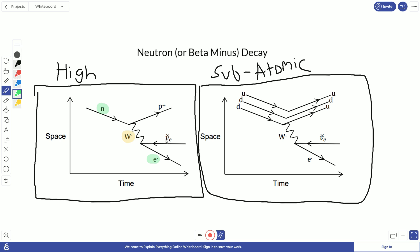And then we get a series of products. We get an electron, an anti-electron neutrino, and a proton. So that's our high level beta minus decay. A neutron goes into a proton through emission of a W minus, that then decays into an anti-electron neutrino and an electron.